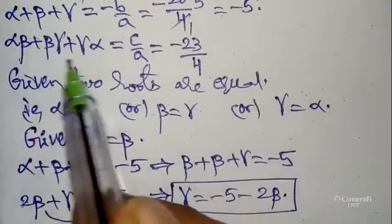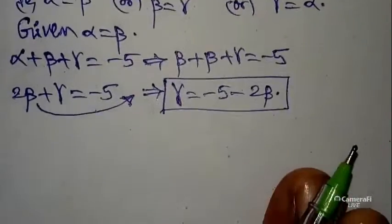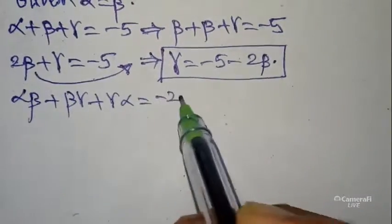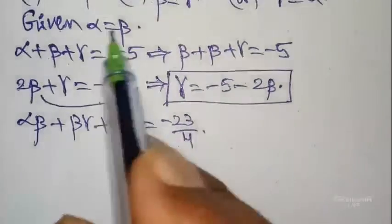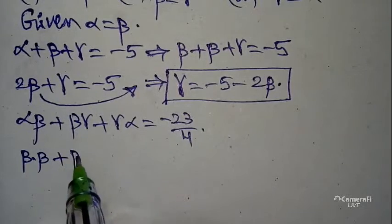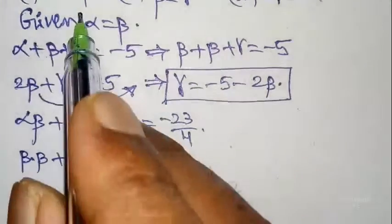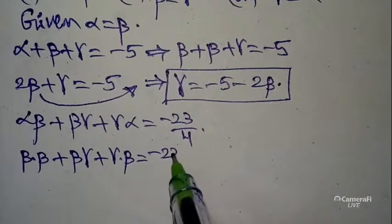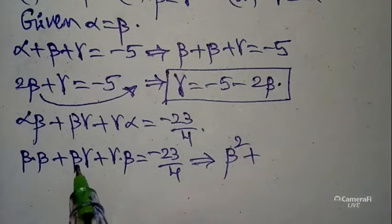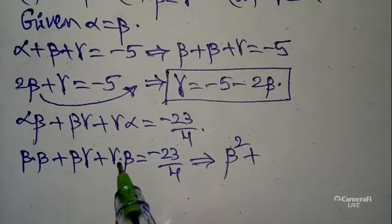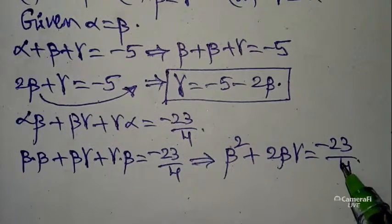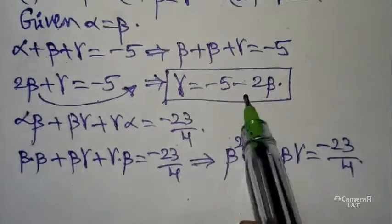Now substitute alpha = beta into the second condition: alpha·beta + beta·gamma + gamma·alpha = -23/4. Replacing alpha with beta gives beta·beta + beta·gamma + gamma·beta = beta² + 2·beta·gamma = -23/4. Using gamma = -5 - 2·beta, substitute here.